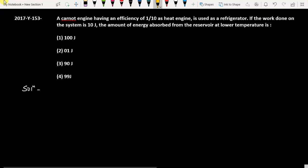This question is from 2017 paper code Y question 153. A Carnot engine having an efficiency of 1 by 10 as heat engine is used as a refrigerator. If the work done on the system is 10 joule, the amount of energy absorbed from the reservoir at lower temperature is...